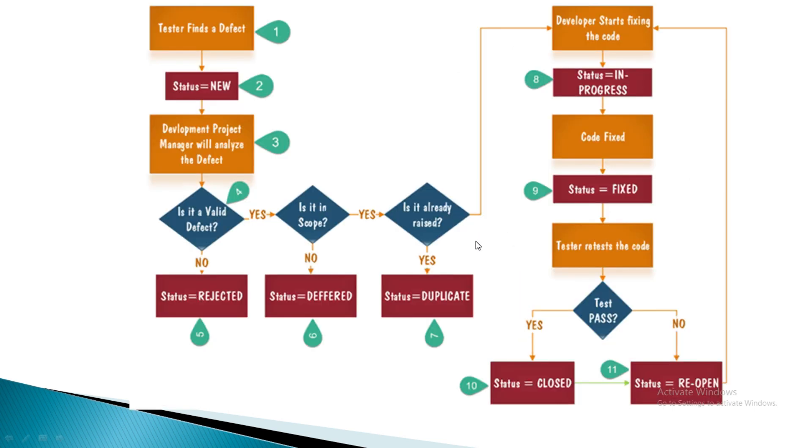With the help of this diagram, we can easily understand what is happening in the defect lifecycle. The tester finds the defect with status NEW. Then the development project manager analyzes that defect and verifies: is it a valid defect? If no, the status is REJECTED.